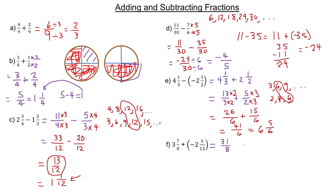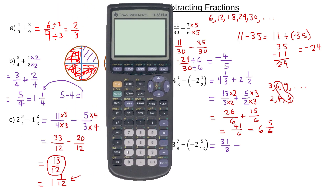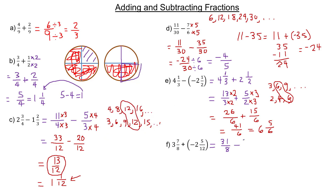Adding a negative is the same as just subtracting. Two times 12 is 24 and five more — using the calculator, two times 12 is 24 and I want to add that five. 24 plus five is 29. So this would be 29 twelfths.